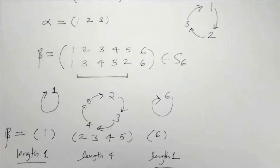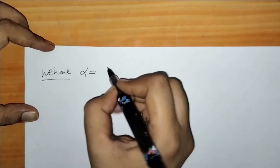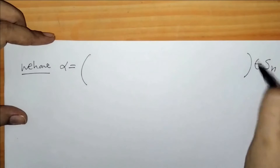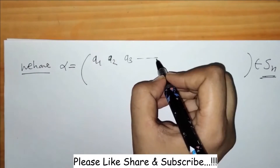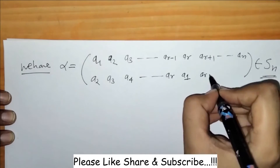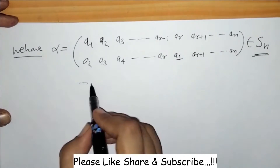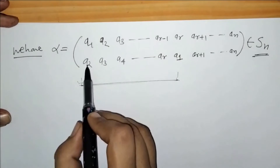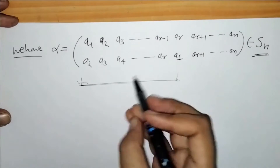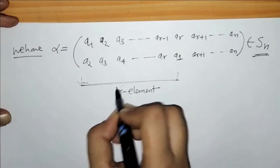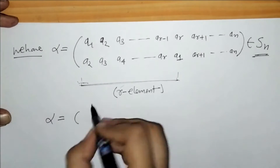Now, in general, we can say that if we have a permutation alpha of the set Sn over n elements, and for this permutation alpha, the first R elements follow: A1 maps to A2, A2 maps to A3, and so on up to AR maps to A1. So this is a cycle of length R — a cycle of R elements.